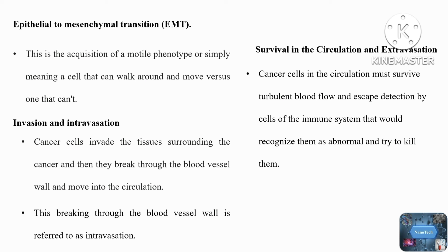After surviving the circulation, the next step is extravasation — remember that moving into the circulation was intravasation. When cancer cells reach the target organ, such as when prostate or breast cancer reaches the bone, they attach to the blood vessel wall and then invade into the tissue. This process is termed extravasation.